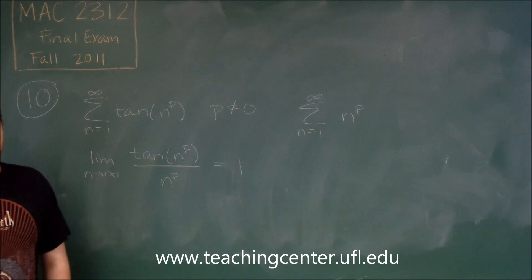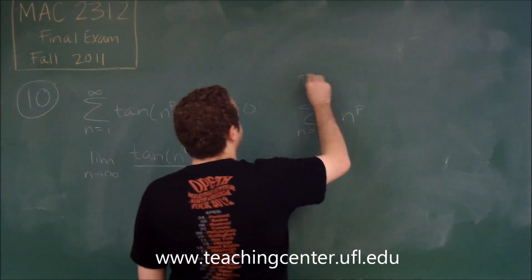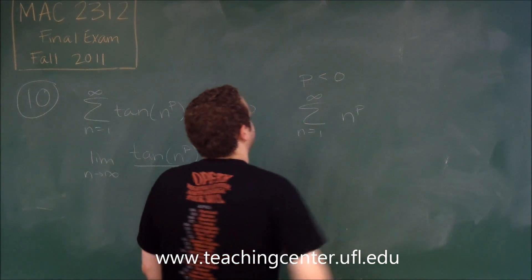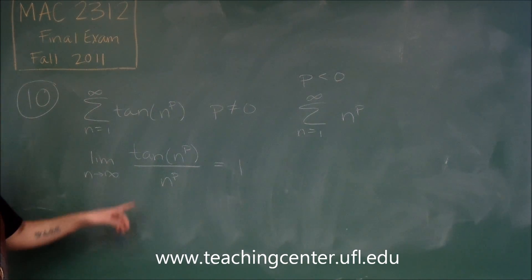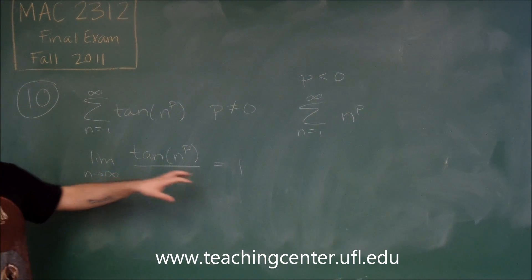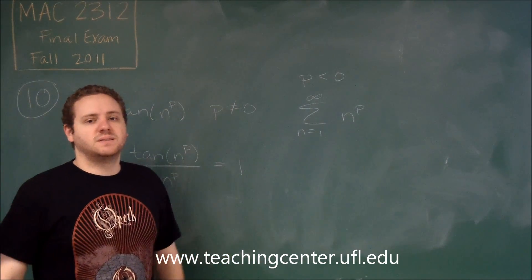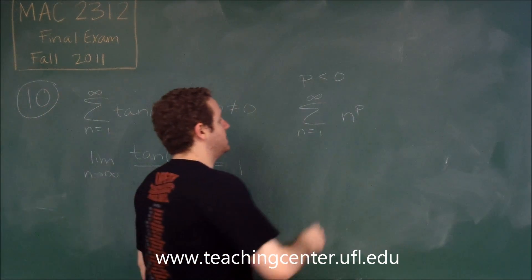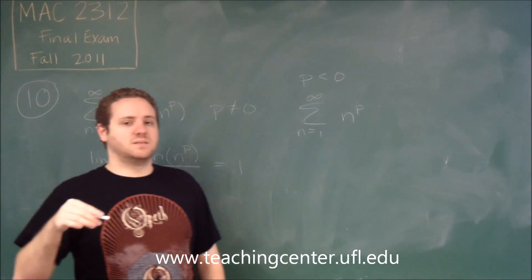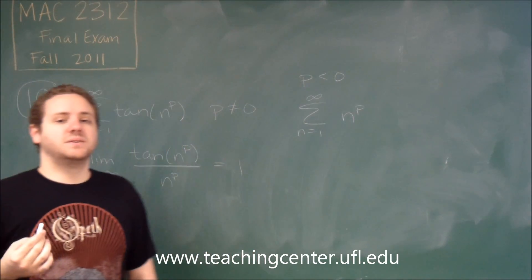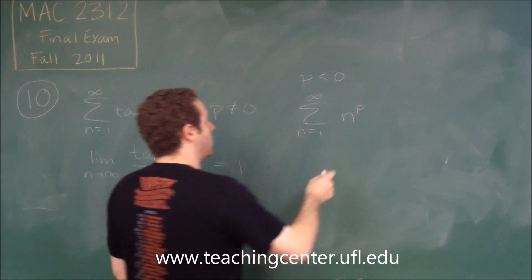Now we're going to look at n to the p. Keep in mind, this is only for p less than 0. If we're looking at this one and we know p is less than 0, we can think of this as the reciprocal. So this is going to be 1 over n to something. And that's exactly our p series test.